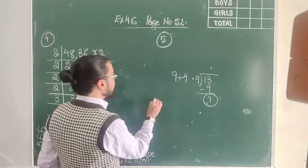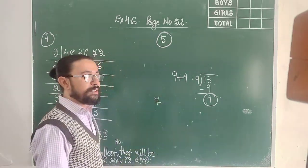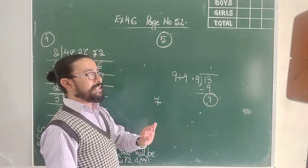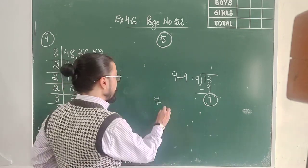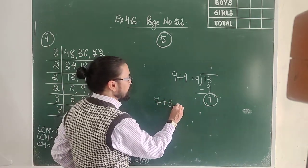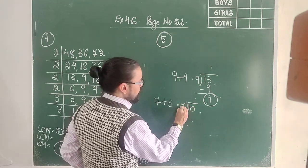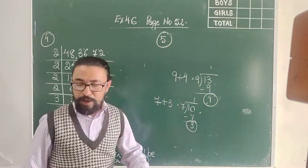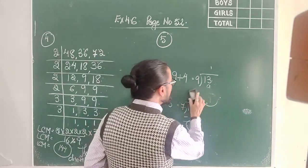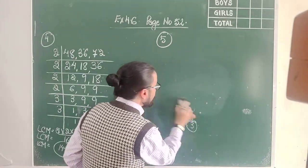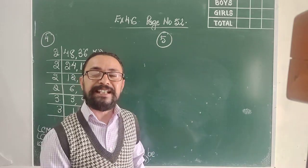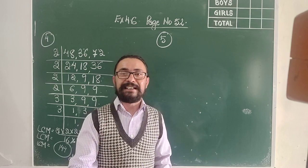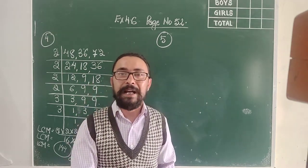One more example: suppose I have 7. After dividing by 7, I need a remainder of 3. So I add 3 to 7 — it becomes 10. Now when I divide 10 by 7, I get a remainder of 3. So in order to get a remainder, I have to add that remainder to the number that is exactly divisible by all the given numbers — that means I have to find the least common multiple.